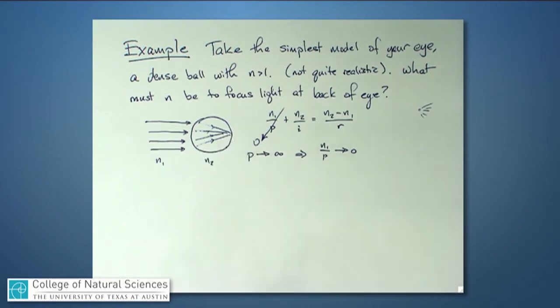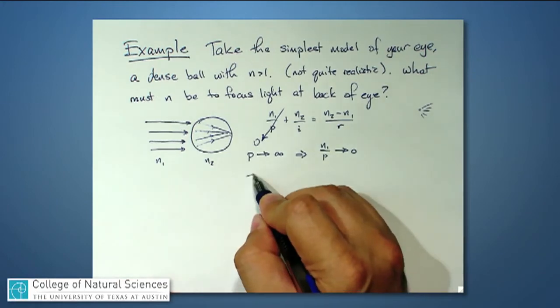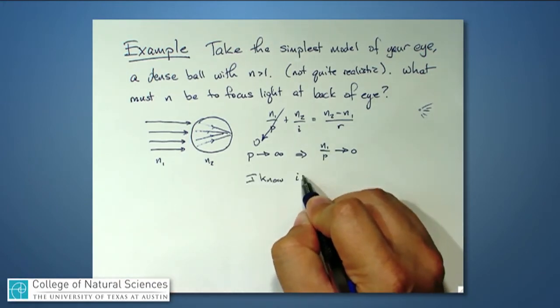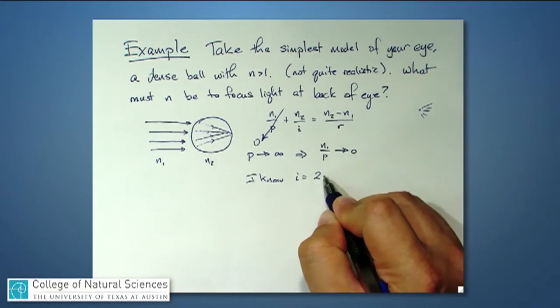In other words, one diameter away from where the light comes into the ball. So I know that I is equal to 2R.